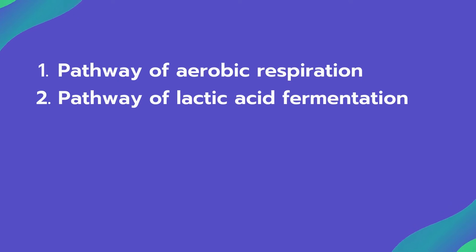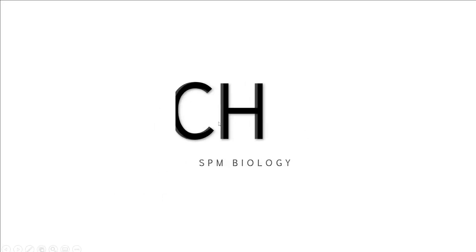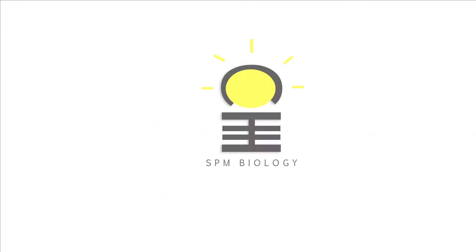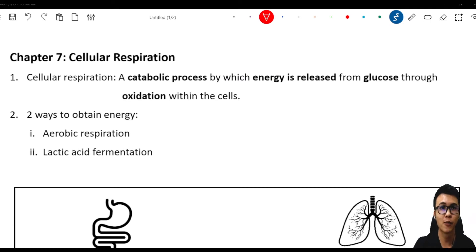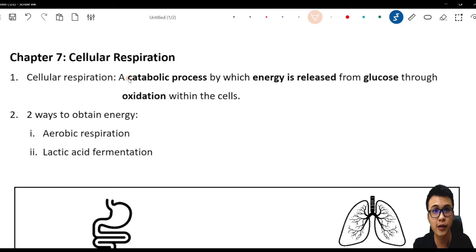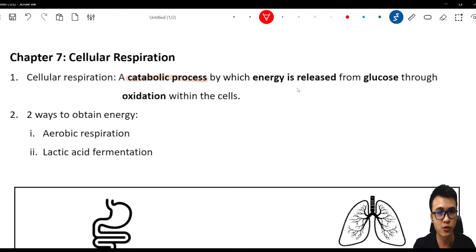Hey guys, welcome back to CH Core Biology. Today we are going to talk about aerobic respiration and fermentation. Let's start Chapter 7: Cellular Respiration. What is cellular respiration? Basically, cellular respiration is a catabolic process that releases energy.